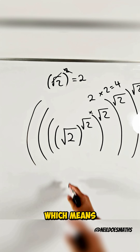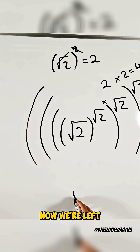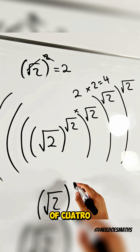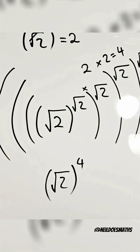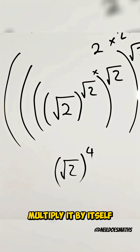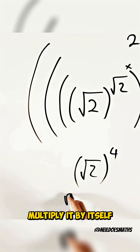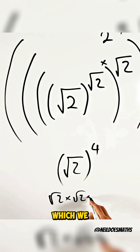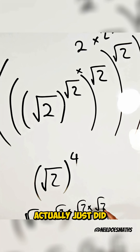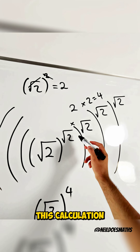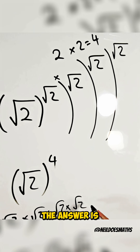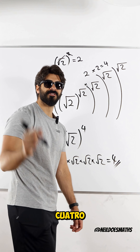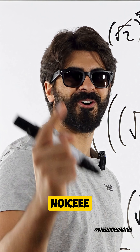Which means now we're left with root 2 to the power of 4, which means take root 2 and multiply it by itself 4 times — which we actually just did this calculation. The answer is 4. Nice.